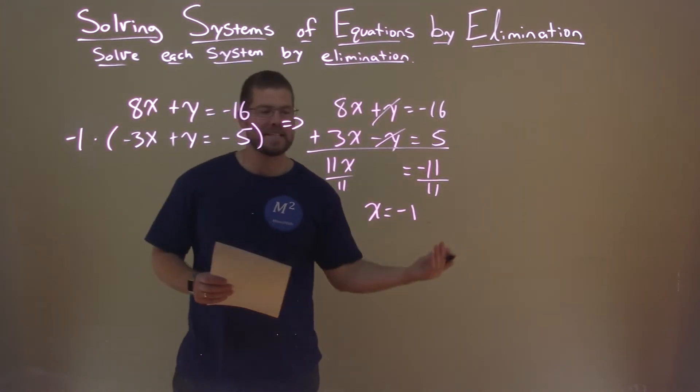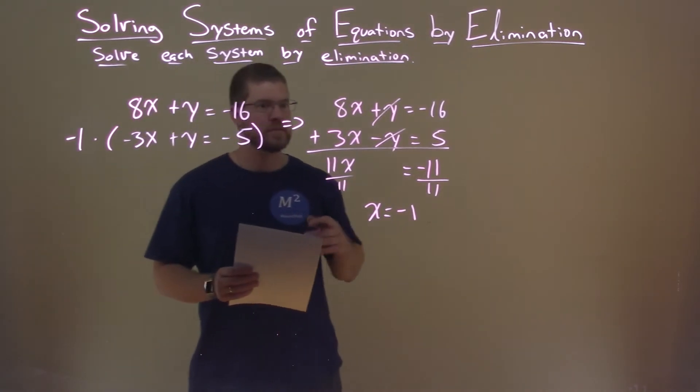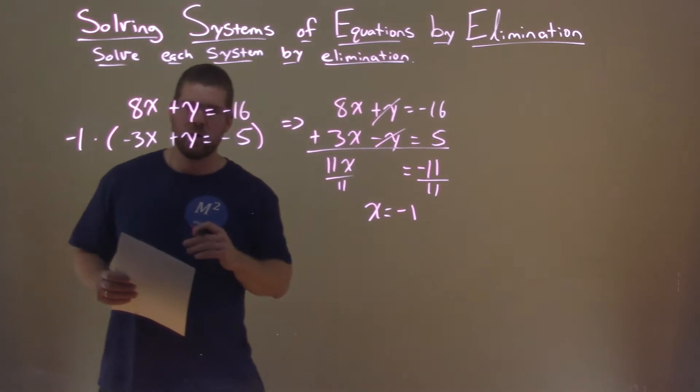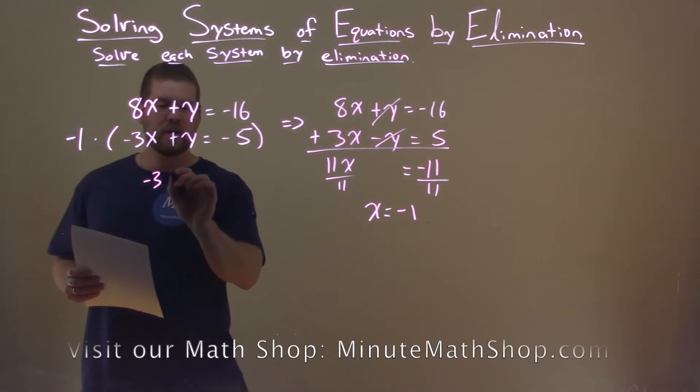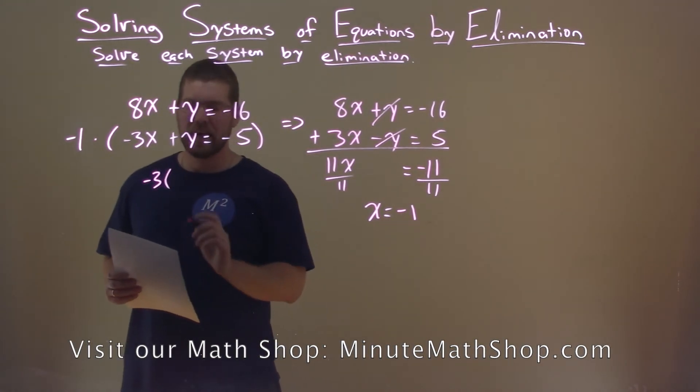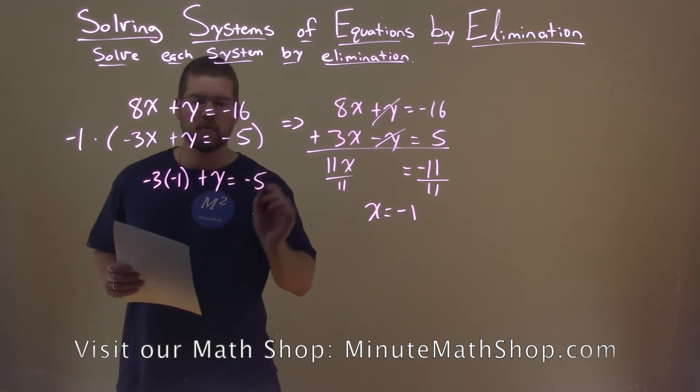Halfway there, we need to take that value here and plug into one of our original equations to solve for y, pick the easier one. I think it's the second equation. So we take negative 3x, and instead of x, we put in a negative 1. Plus y equals a negative 5.